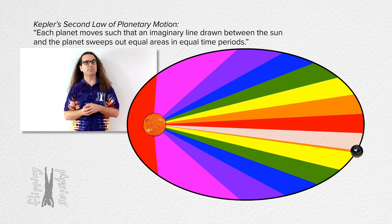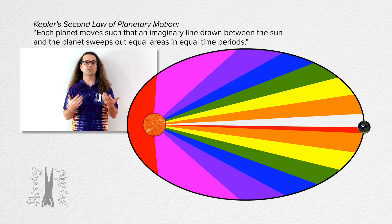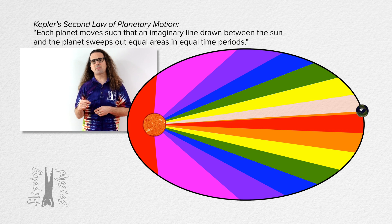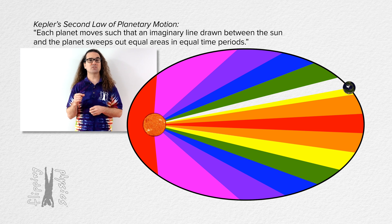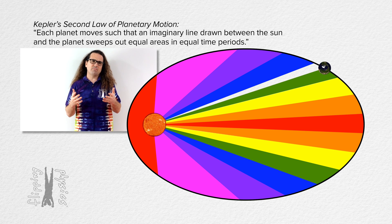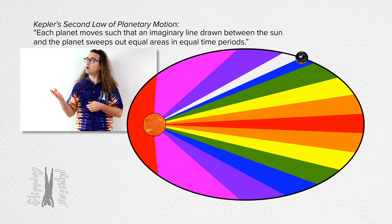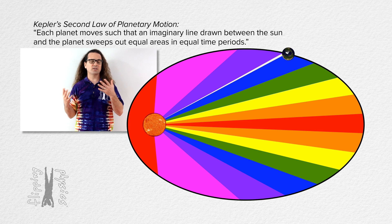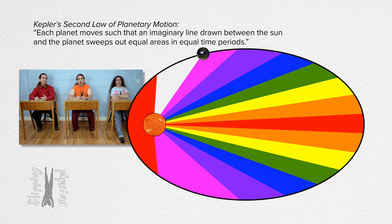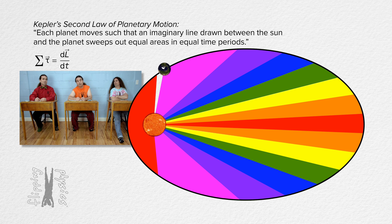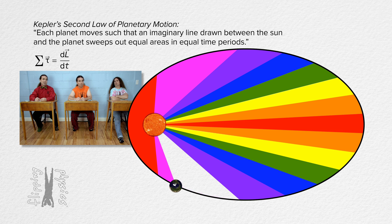In order to prove Kepler's Second Law — that all the areas in the illustration are equal — we need to start by proving that the angular momentum of a planet about the axis of rotation of the sun is conserved. We have actually already done this before, so Bo, could you please walk us all the way through that?